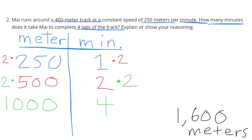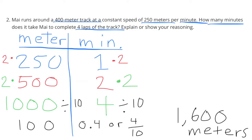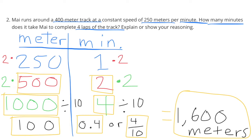1000 meters plus 500 meters gets me to 1500 meters — I'm short 100 meters. So let's divide the 1000 meters by 10 to get 100 meters, and four minutes divided by 10 gets me to four-tenths of a minute. So now I have 500 plus 100 is 600 plus a thousand is 1600.